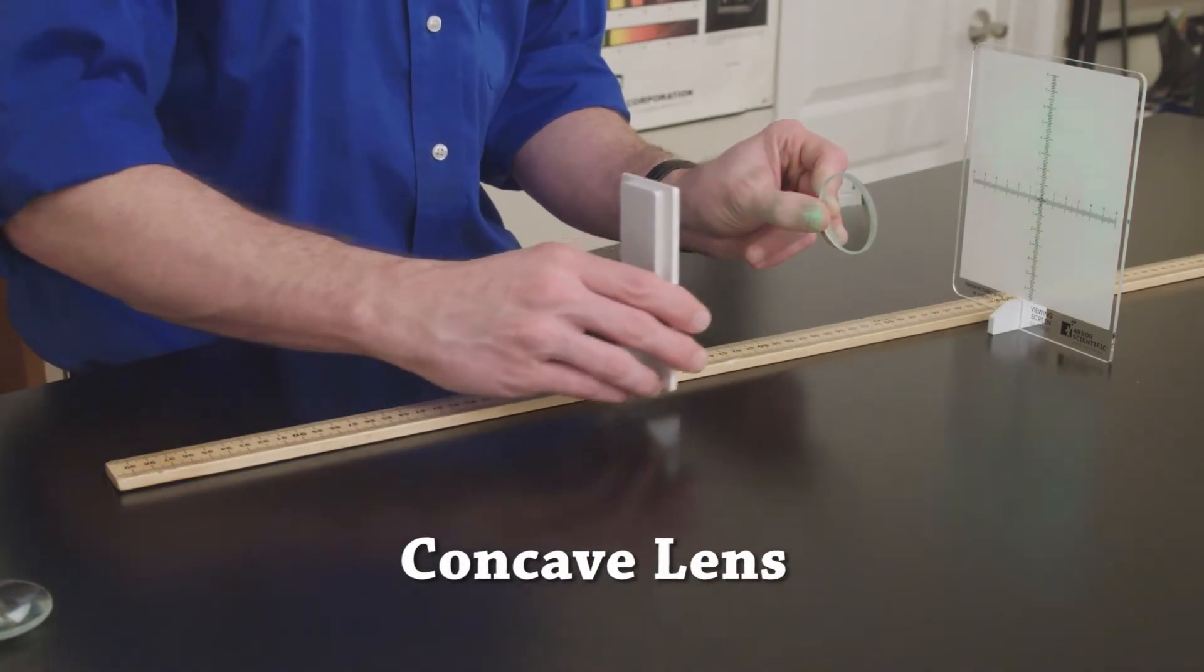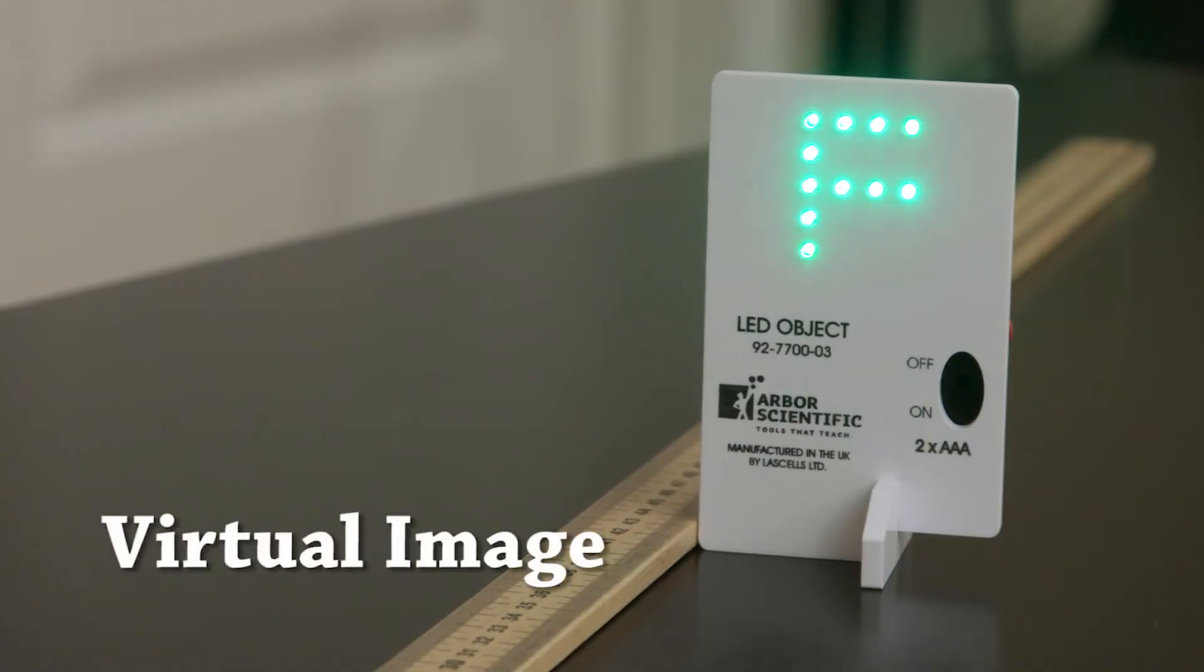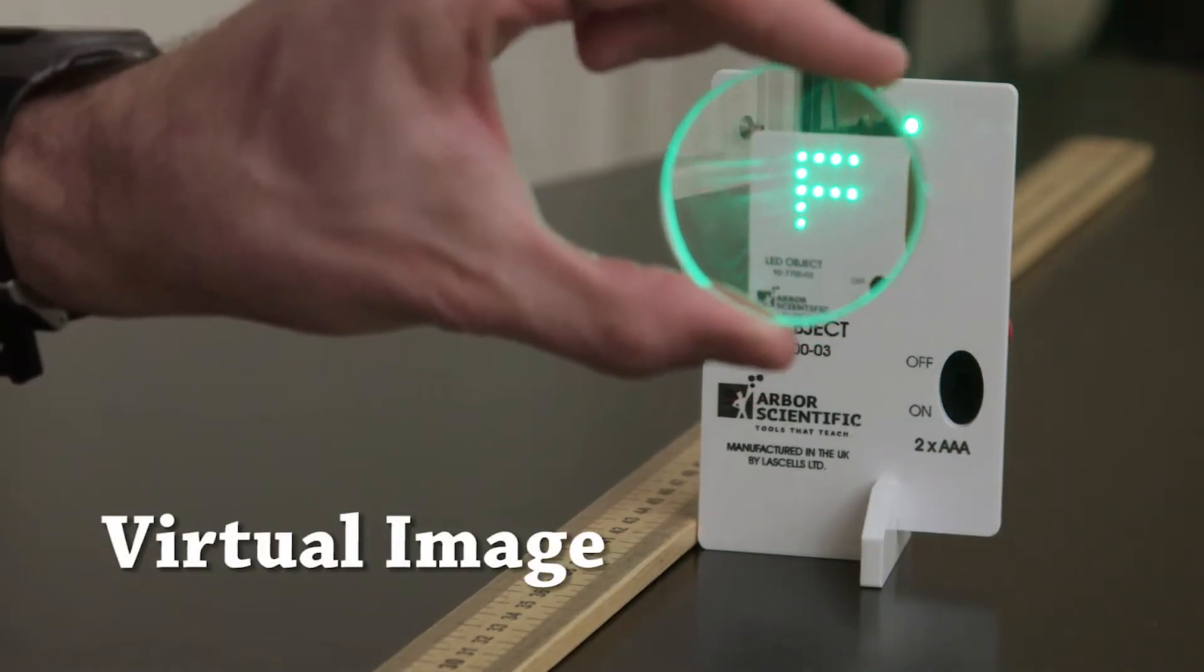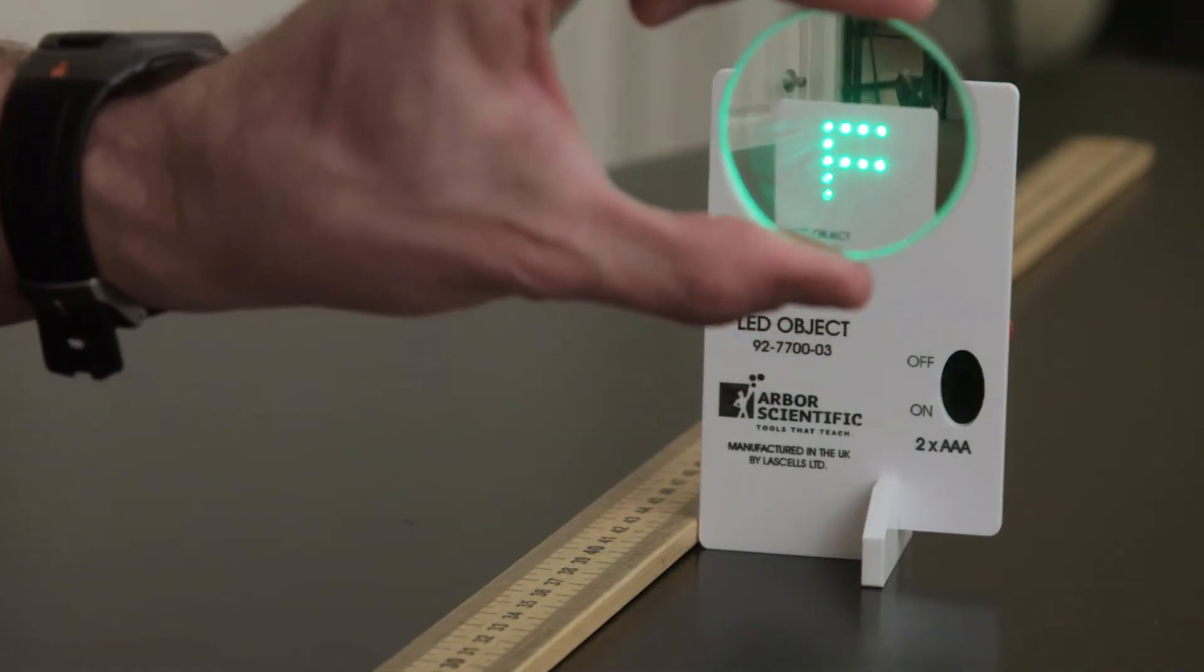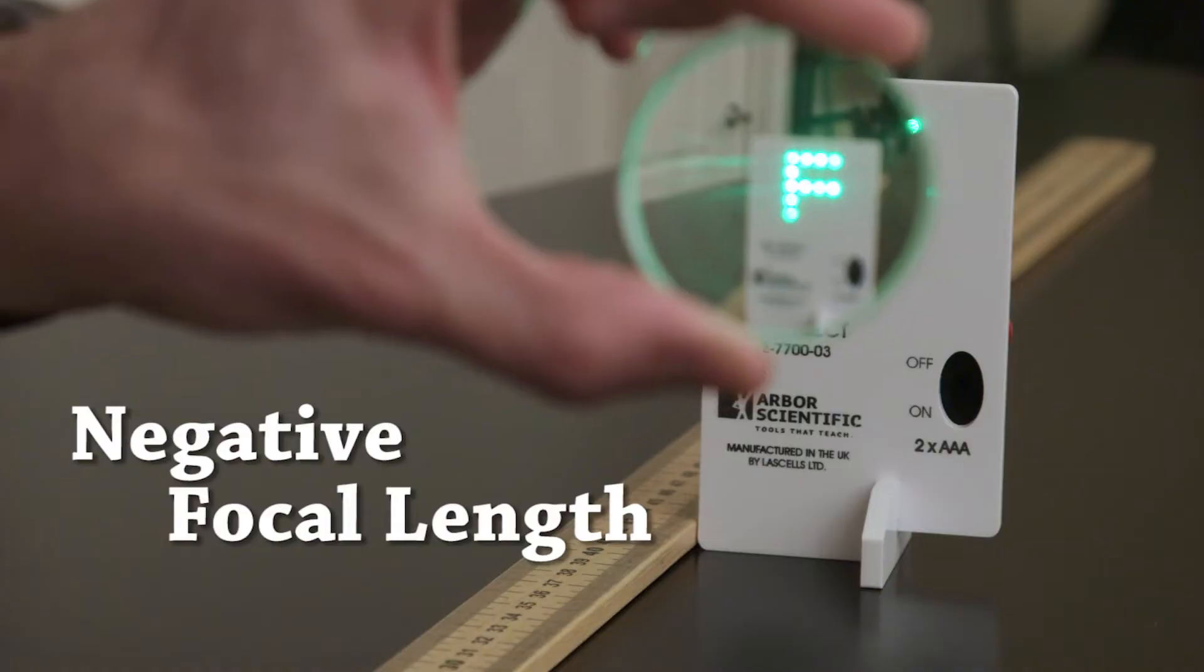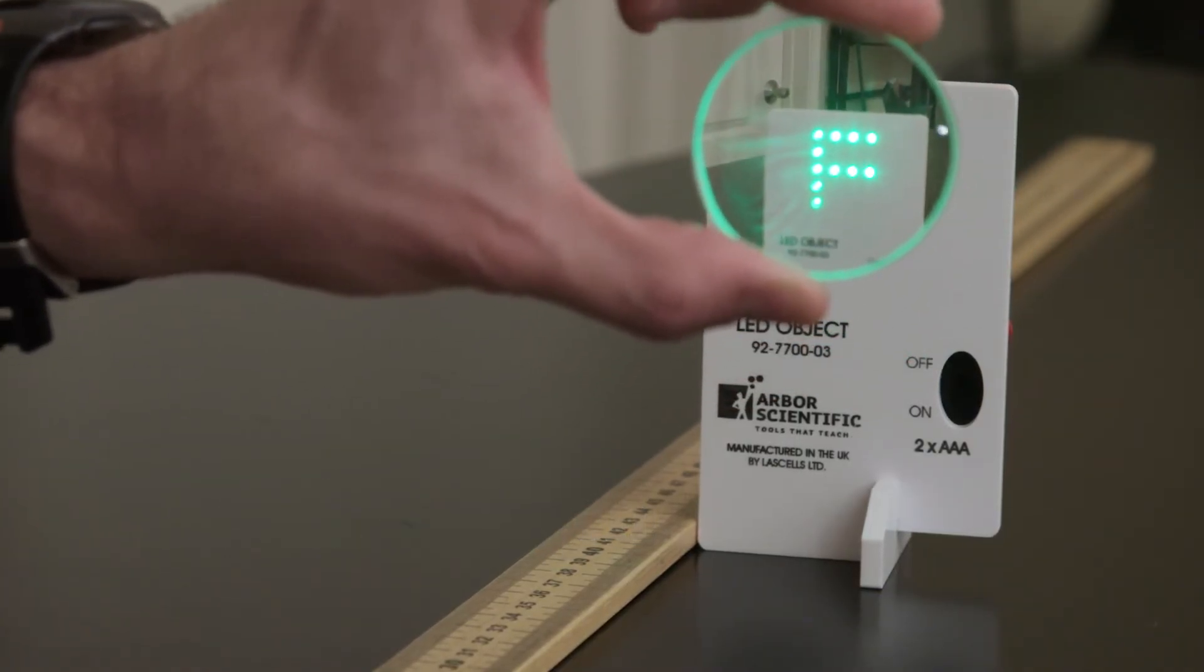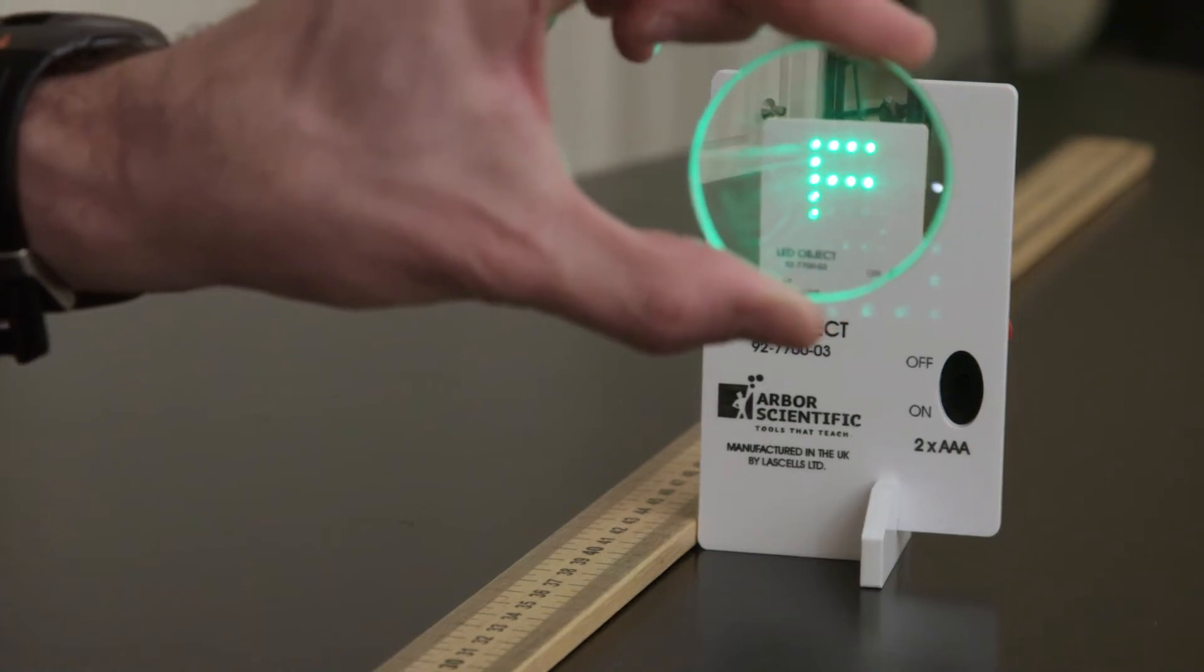But if you look at a virtual image through the lens and get it to be one-half the height of the object, then that is the focal length. But it is a negative focal length because the image is only formed in the virtual space, that is, the negative distance behind the lens.